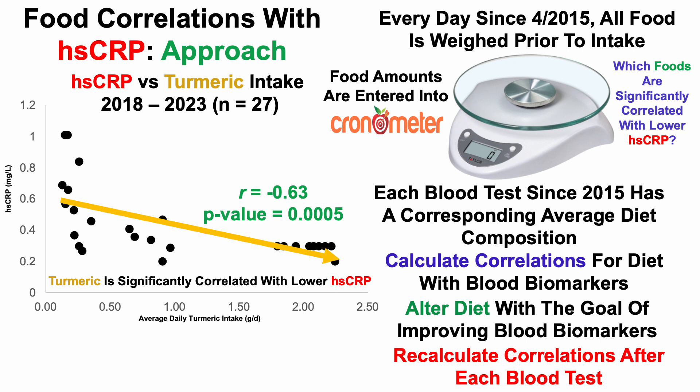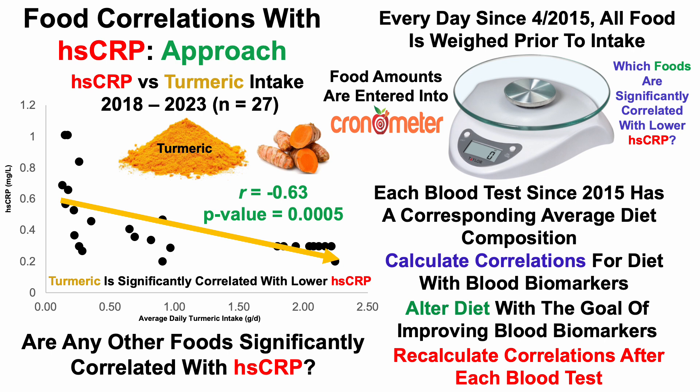In terms of how I get turmeric into my diet, I use ground powder, in contrast with the turmeric root. For some reason, eating the root tastes like soap to me and ruins anything it's in, whereas using the powder — I add it to cooked meals and it doesn't ruin the food; it actually helps with taste and texture. This is the strongest correlation for foods with lower HSCRP in my data.